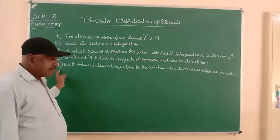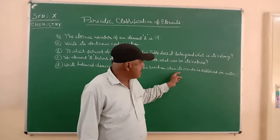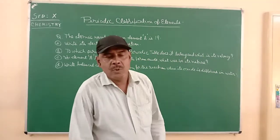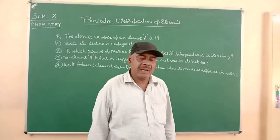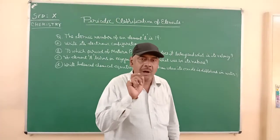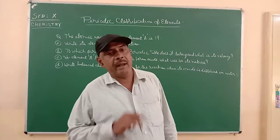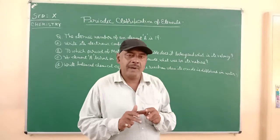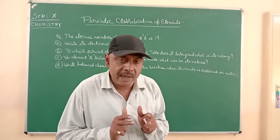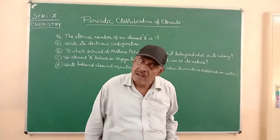If the element A burns in oxygen to form oxide, what will be its nature? Lastly, write the balanced chemical equation when its oxide is dissolved in water. But first of all we have to write the electronic configuration of the given element, find its period, then find its valency.